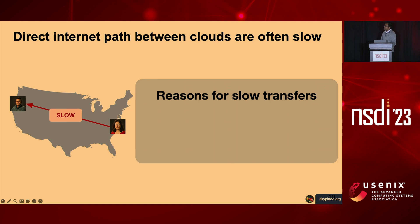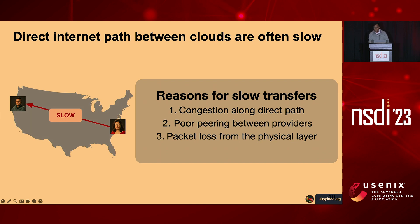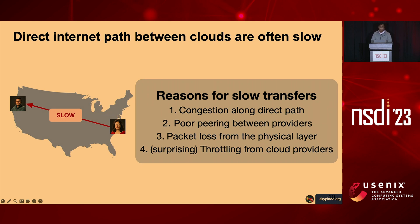To understand how we can optimize the performance of internet transfers between clouds, we first study why the direct internet path between clouds is often slow. One common reason is congestion along the direct path—internet transfers that traverse shared resources like transatlantic network cables often run at high utilization. We also find that cloud providers may have poor peering, and even when they do peer, it only occurs at very specific discrete locations. There can also be packet loss at the physical layer. Most surprisingly, some cloud providers—notably AWS and GCP—heavily throttle egress flows from their clouds, and tenant applications need to be aware of these throttling limits.